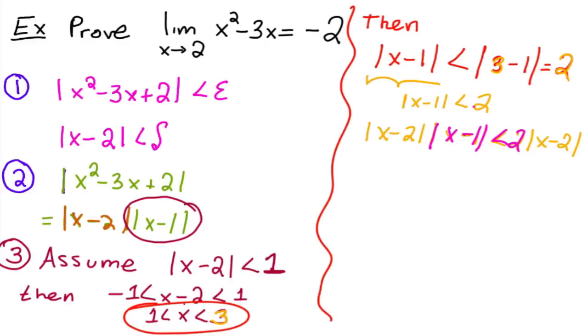And see, now what you have is you have a constant times your x minus 1 and you can work with that. So that was the whole point of doing this assumption is that you're bounding this x minus 1 that you don't have control over.